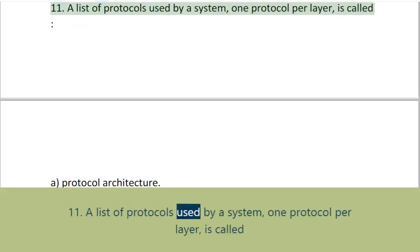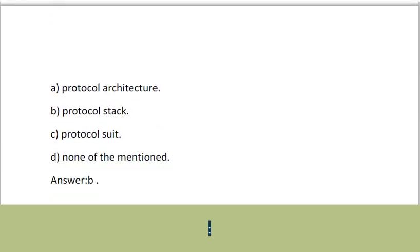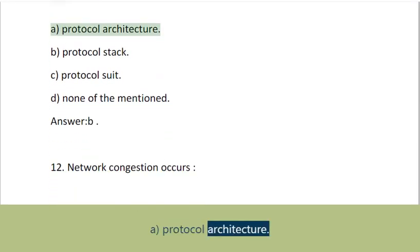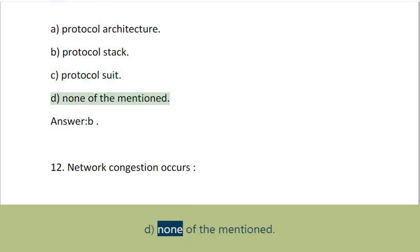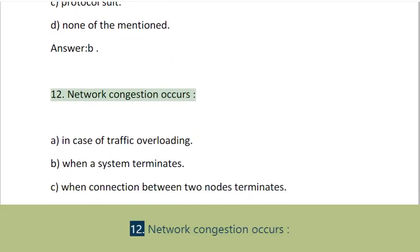Question 11: A list of protocols used by a system, one protocol per layer, is called: A. Protocol architecture, B. Protocol stack, C. Protocol suit, D. None of the mentioned. Answer: B.